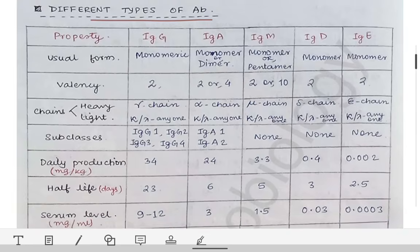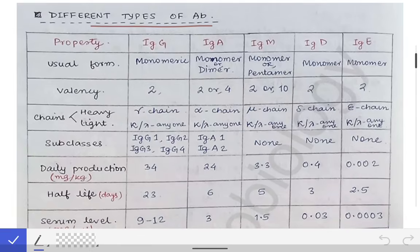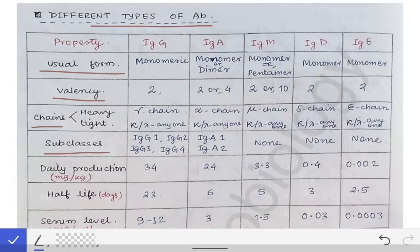We will try to remember all those facts about all those antibodies in a tabular manner so that we can retain it for a longer time. We will see different properties: the usual form, valency, different types of chains present, then subclasses, daily production rate, half-life, and similarly different things all together.